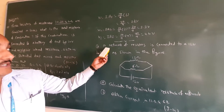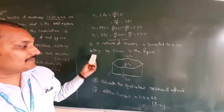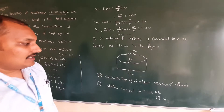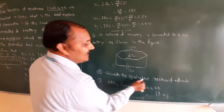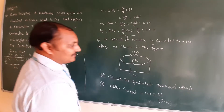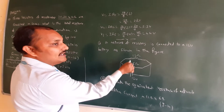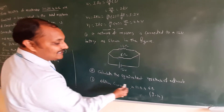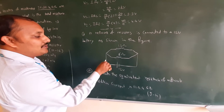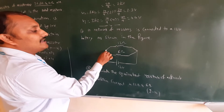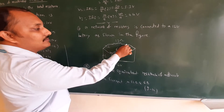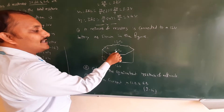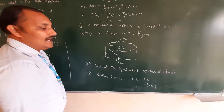Next, the parallel combination problem. A network of resistors is connected to a 12 volt battery as shown in the figure. First, calculate the equivalent resistance. Two resistors are connected in parallel — we need to find the resultant resistance. Then find the current through 12 ohms (I1) and 6 ohms (I2).